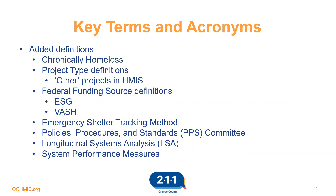The first section with changes is the key terms and acronyms section at the very beginning of the policies and procedures. We added definitions for terms helpful for HMIS users to know: the currently homeless definition, different project type definitions, federal funding source definitions, the emergency tracking method definition, the policies, procedures and standards committee, and two reports submitted to HUD — the longitudinal systems analysis and the system performance measures.